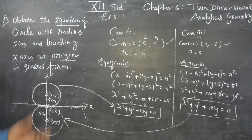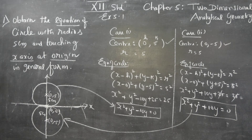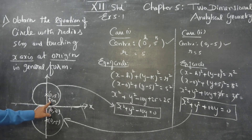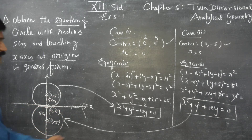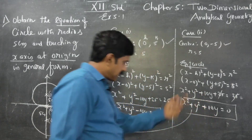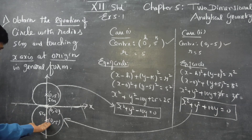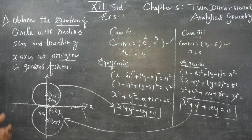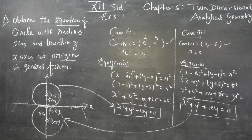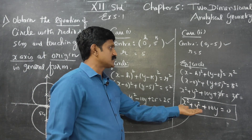For the circle below the x-axis, the center is (0, -5). Using the same formula: (x - 0)² + (y + 5)² = 5². Expanding: x² + y² + 10y + 25 = 25. Cancelling gives x² + y² + 10y = 0. So the two general forms are x² + y² - 10y = 0 or x² + y² + 10y = 0.